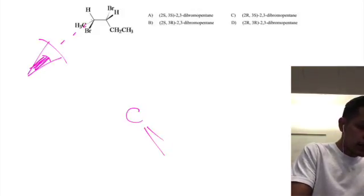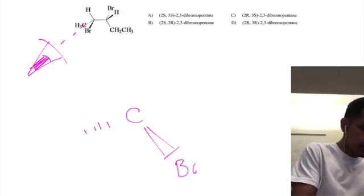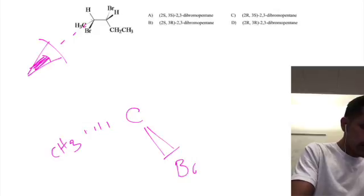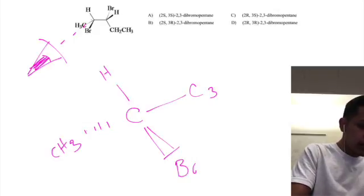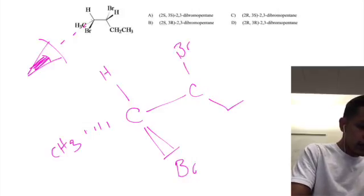We've got a bromine going towards us, we've got a methyl going away from us, we've got a hydrogen, and then we have our C3 which is attached to a bromine, an ethyl group, and a hydrogen.